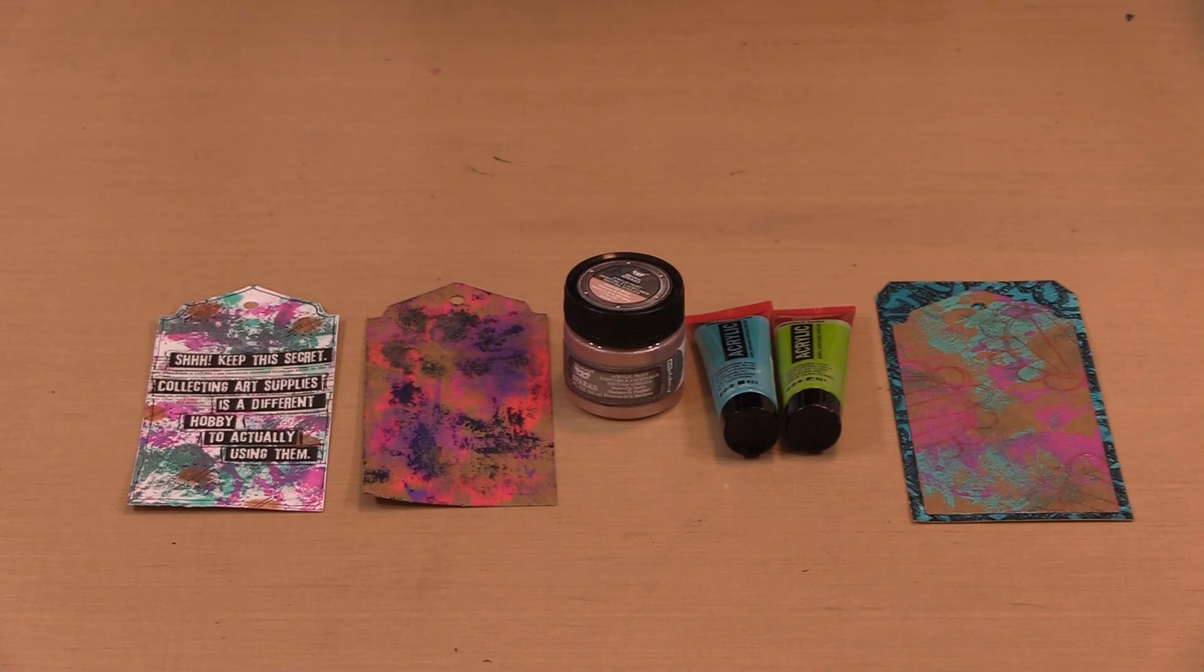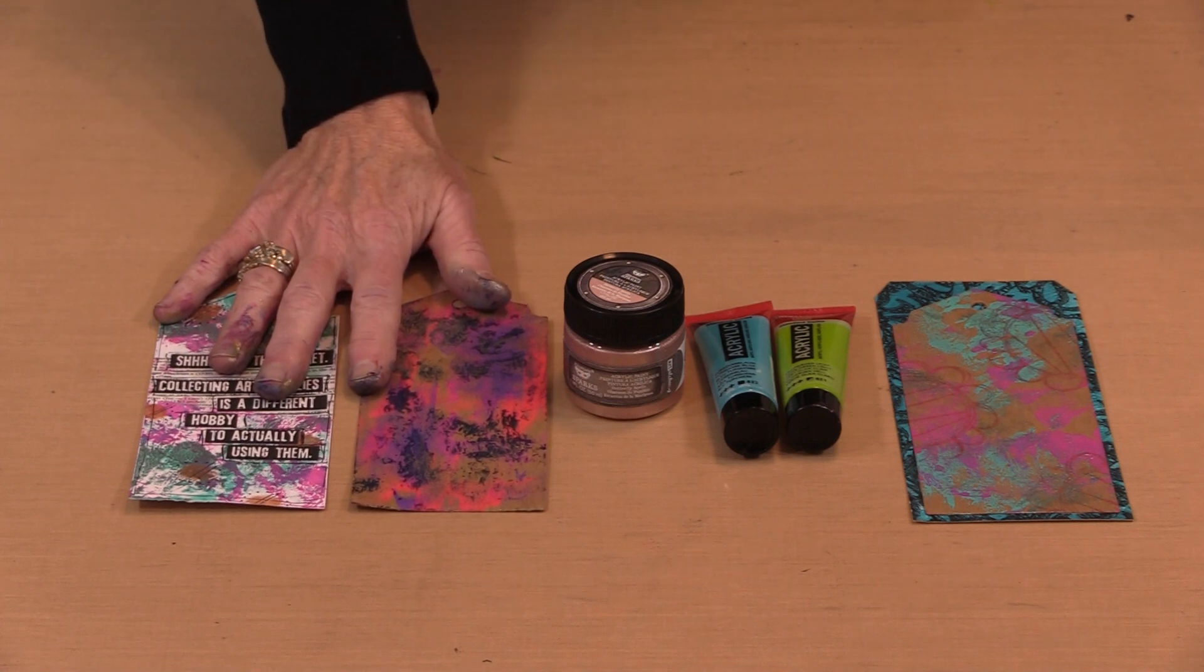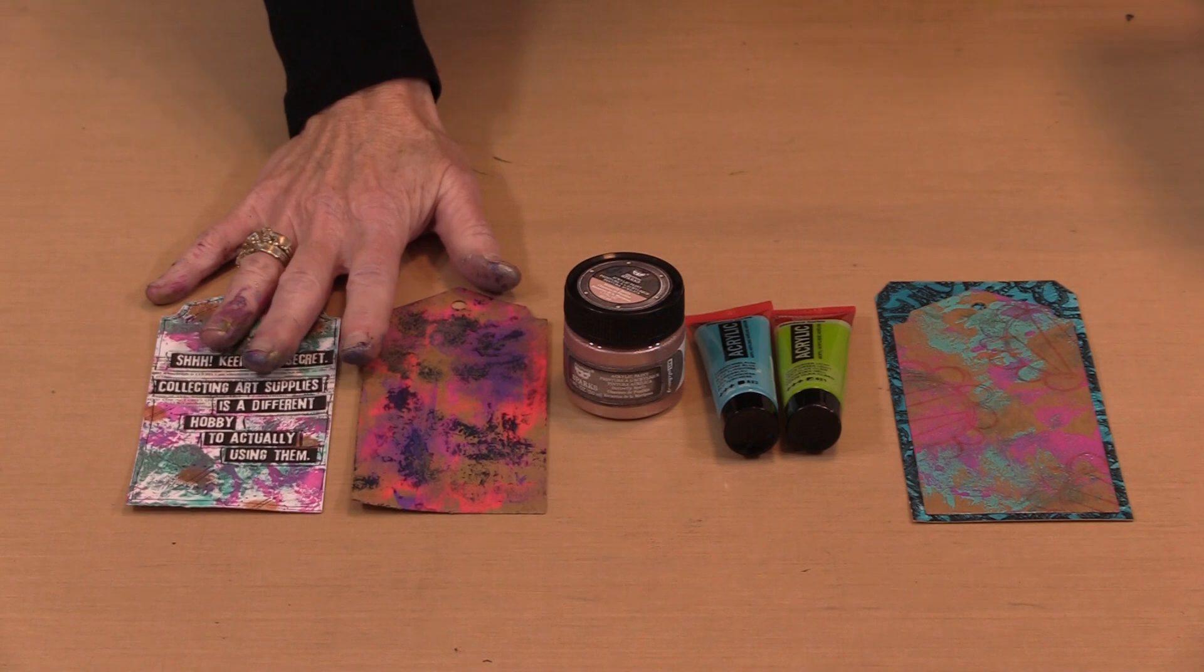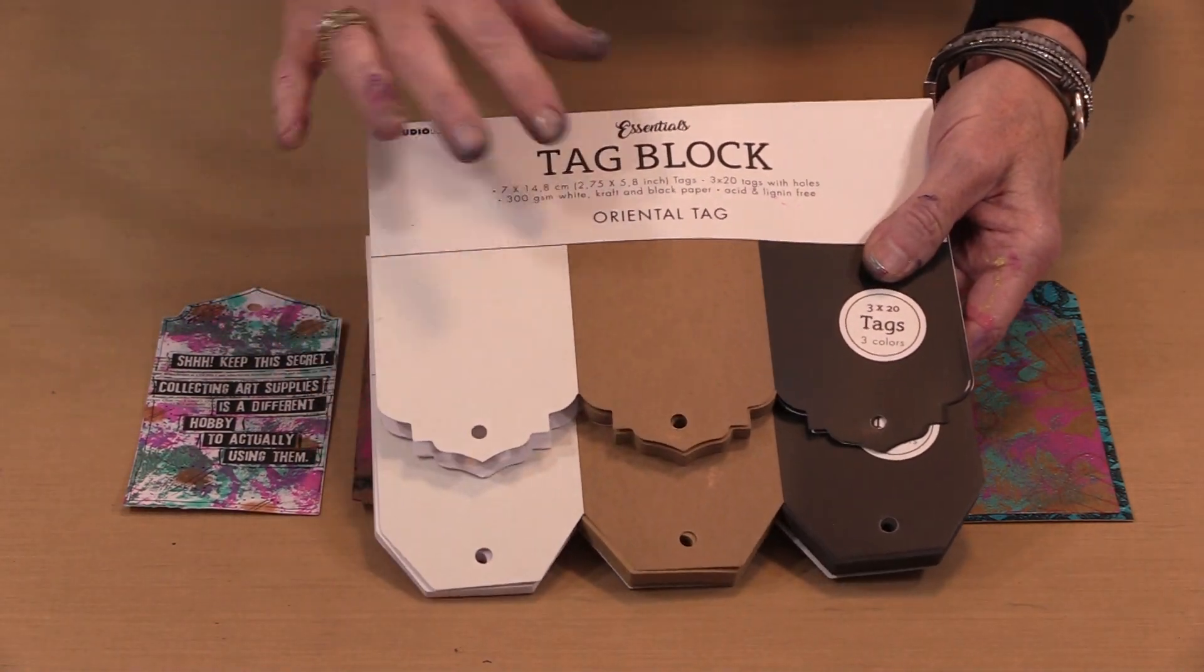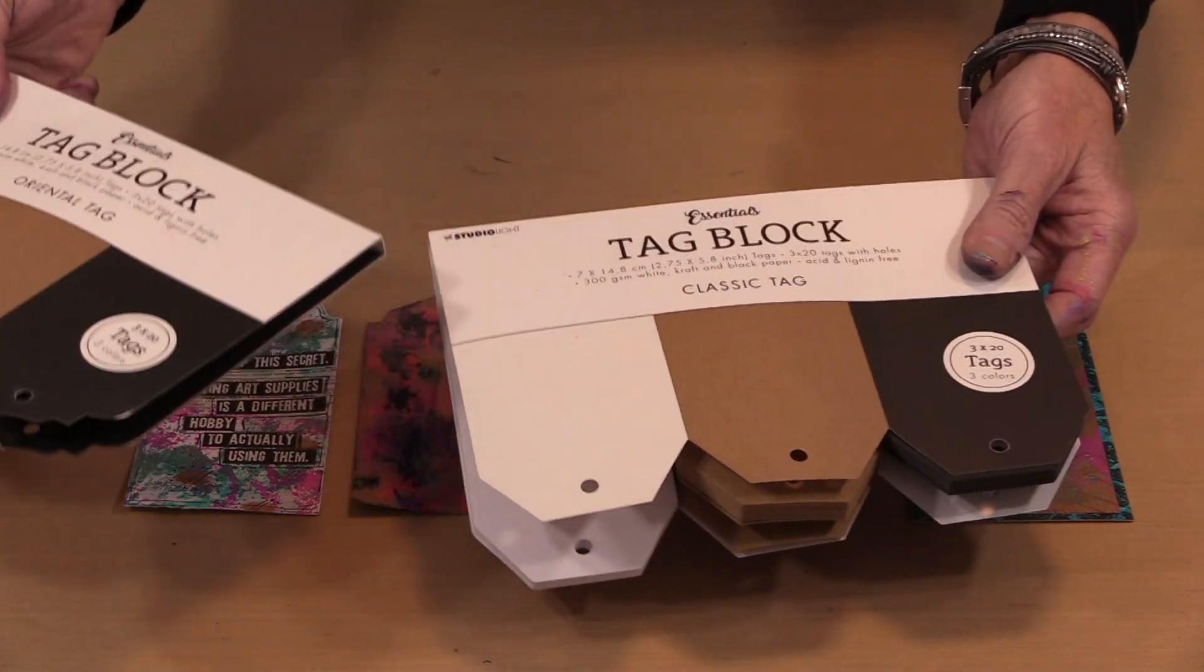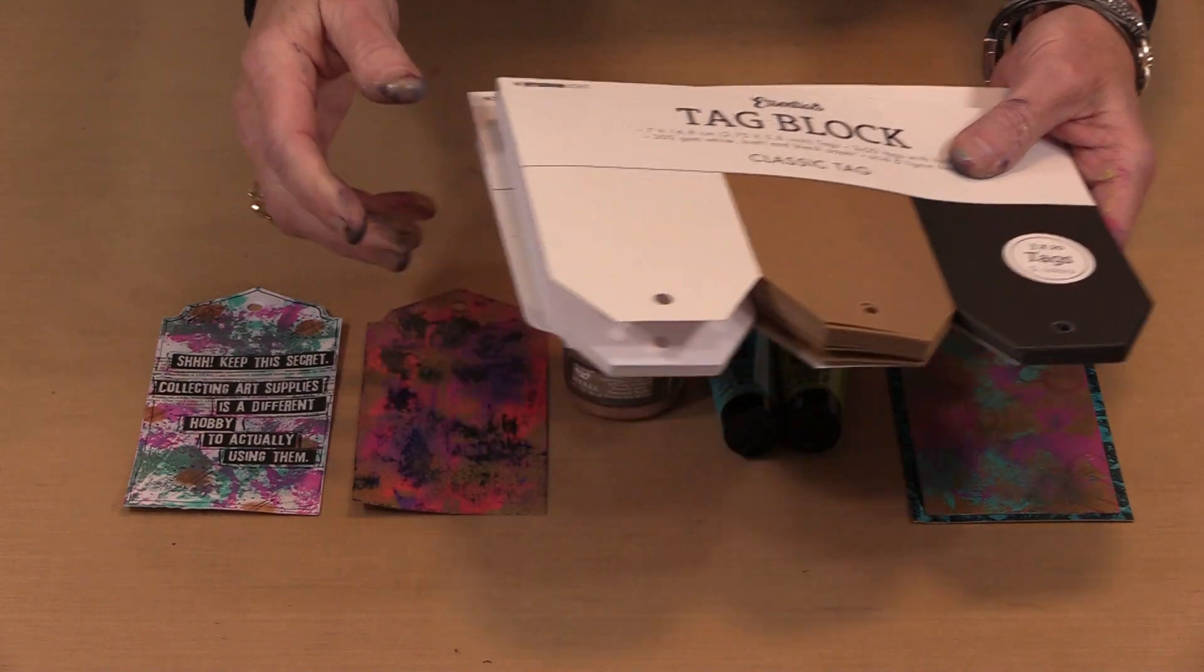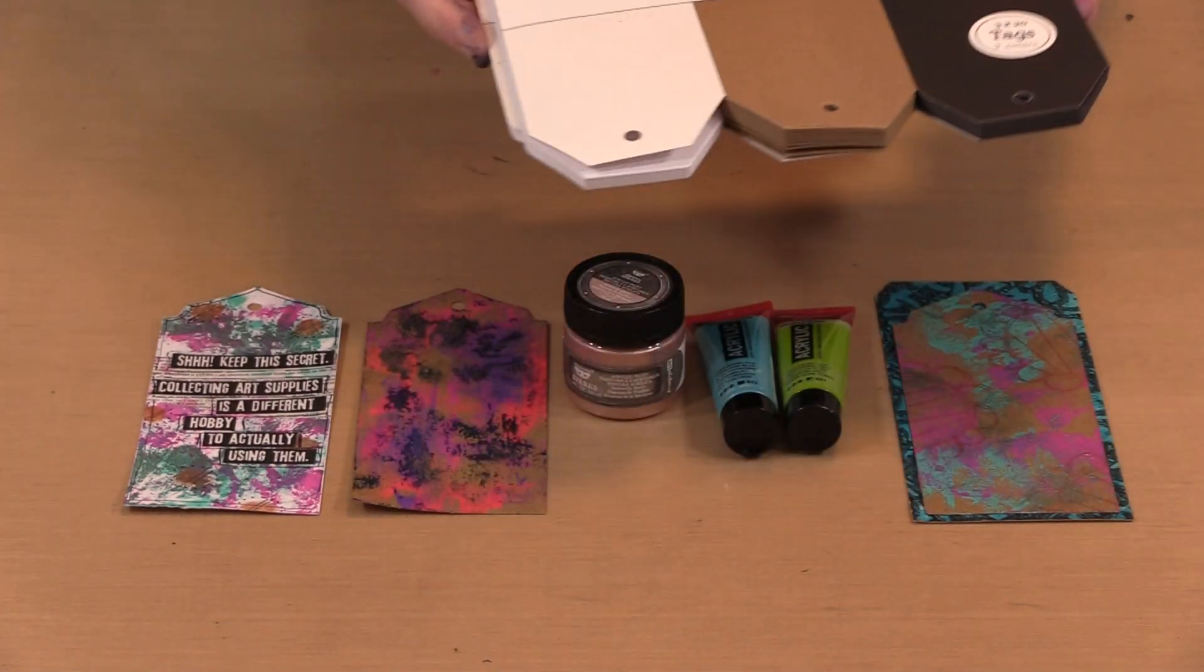If you viewed last week's video about the Studio Light tags, then you'll certainly remember these. The Studio Light Essentials tags are available in four sets. This happens to be the one named Oriental. This is the one named Classic. And there are two others. There's Global and I forget what the fourth one is. But they're packs of tags that come like these. You get 20 each of the three colors.